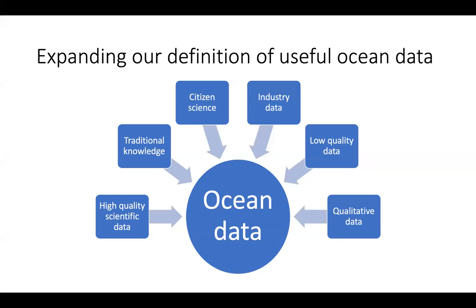There are really interesting ways in which we can begin to use lower-quality data for triage — for identifying potential problems that can then be researched further with more intensive methods and higher-quality data outputs. But right now, this type of data — citizen science, industry data, qualitative data — is not really being thought about when we consider a broader ocean data revolution. Moving beyond just the very traditional data sources from ocean observing systems to include all of these other types of data is super important.